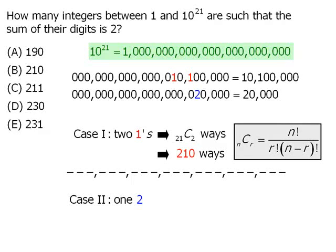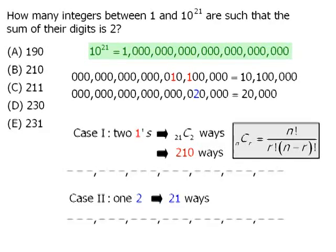Now on to case 2. How many 21 digit numbers have exactly one 2 and 20 zeros? Well, we have 21 spaces all together and we need to choose one of them to place our two. We can accomplish this in 21 ways.